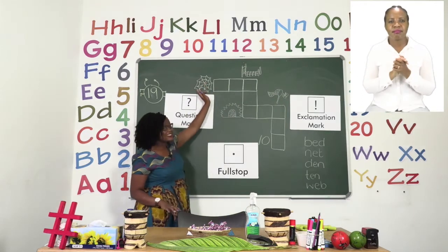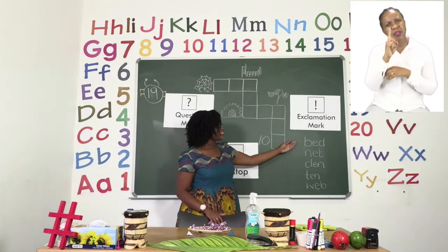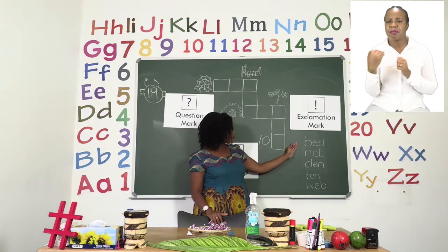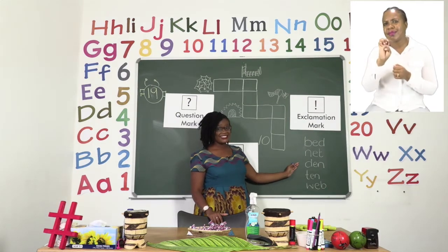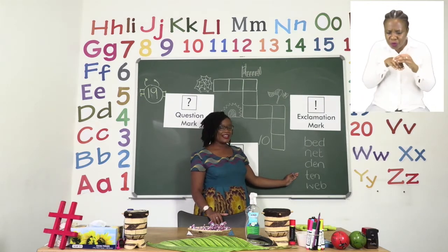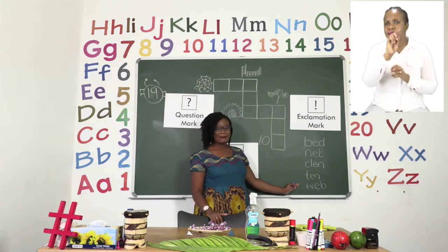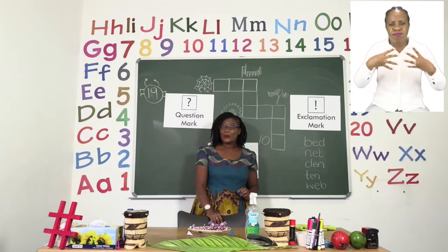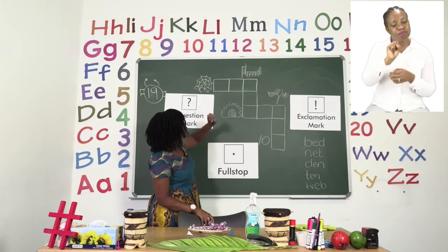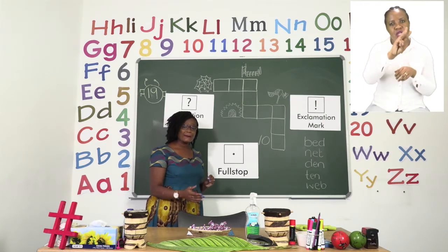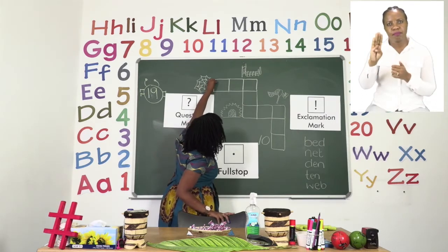What do you think this is? The picture is there and the words are here. Is it a bed? Or a net? Or a den? Or the number 10? Or a web? If you guessed web, well done! This is a web. So we are going to write the word 'web' going across.